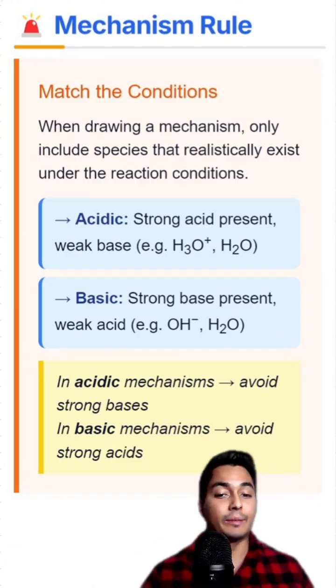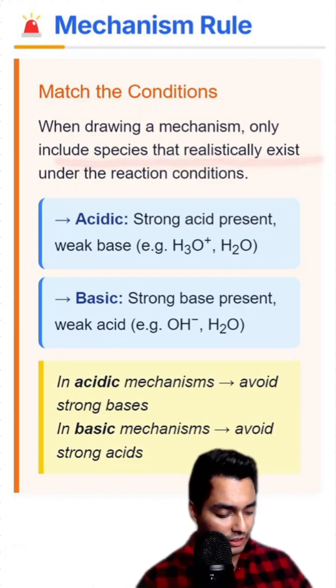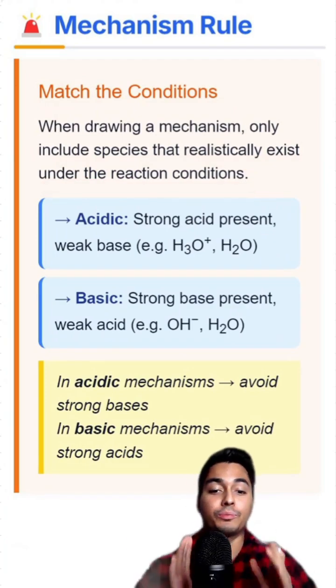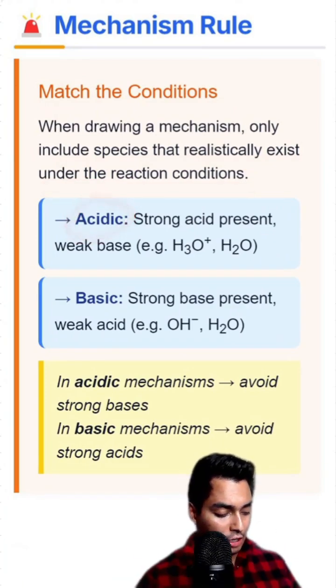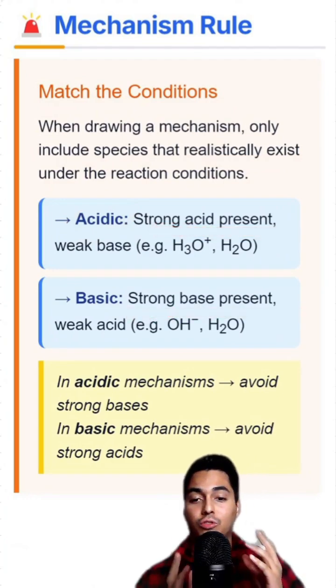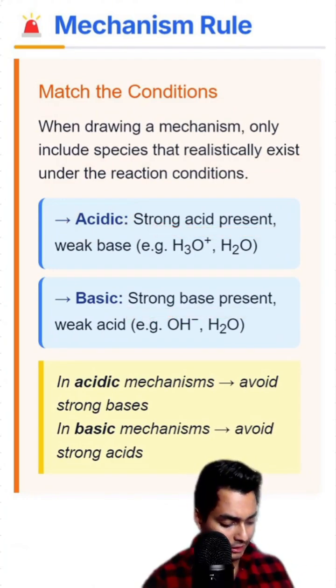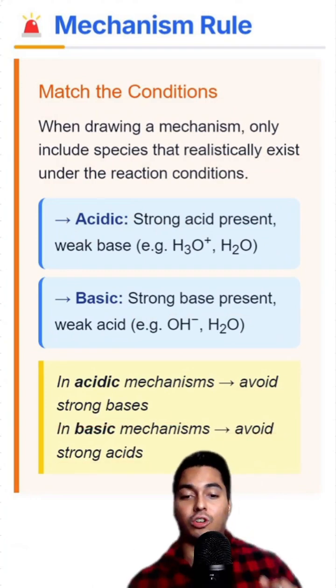Now an important tip I have for you for hydrates is to match the conditions. When you're drawing the mechanism, only include the species that realistically exist under those specific reaction conditions. Meaning when you're doing acidic conditions, only use strong acid. When you're in basic conditions, only use strong base. In acidic mechanisms, avoid strong bases. And in basic mechanisms, avoid strong acids.